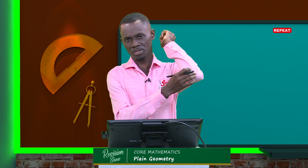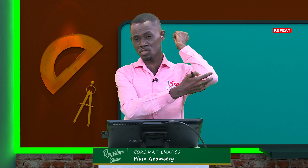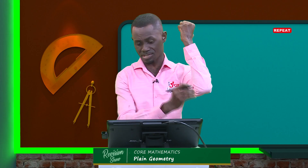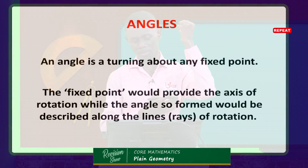Let me illustrate it. You have an elbow — my elbow is a fixed point. My lower arm and my upper arm are what in mathematics we call the ray, or better still, the line or line segment. If I turn, that shape created is called an angle. So it is a turning about a fixed point — my elbow. The fixed point provides the axis of rotation, while the angle so formed will be described about the lines or rays of rotation.